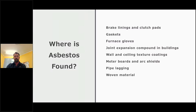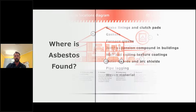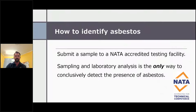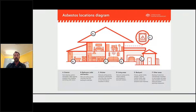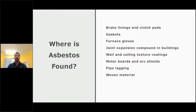Wool and ceiling textured coatings. Meter boards. Pipe lagging. Lots and lots of different materials — we've even found it in wallpaper. A handy little guide by the Australian Government is a locations diagram on their website about where in any house you can find asbestos-containing materials.